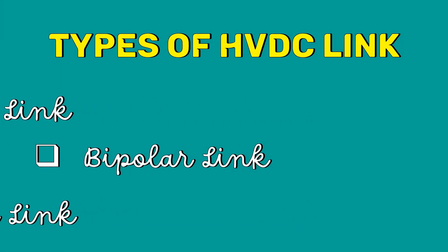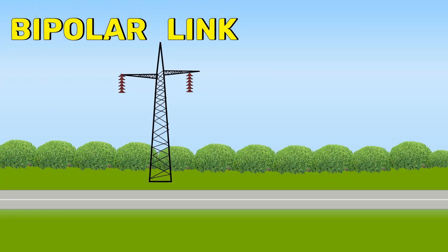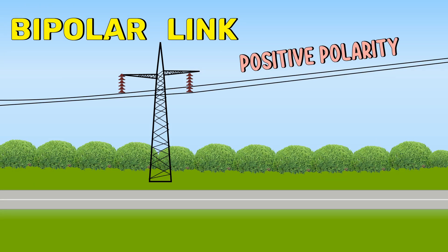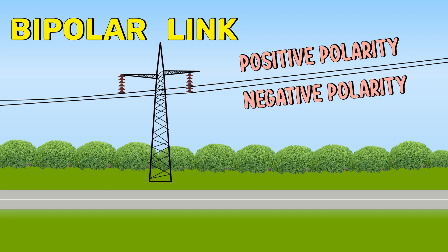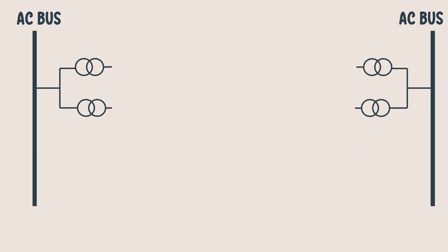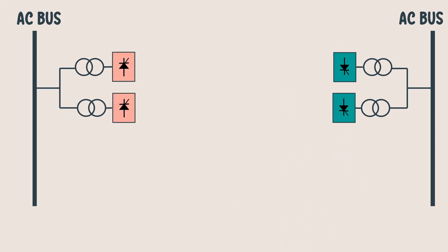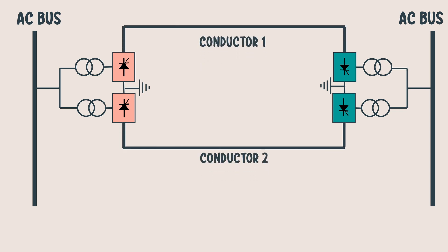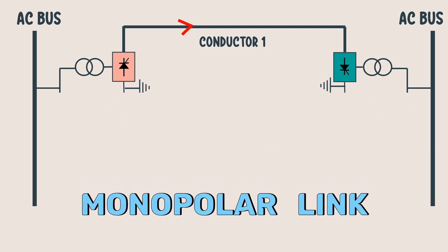The next one is the bipolar link. Bi means two. As the name indicates, this link has two conductors — one positive and the other of negative potential of the same magnitude. At each terminal, two converters of equally rated voltages are connected in series on the DC side. The junction between the converters is grounded. If the current in the two conductors is equal, then the ground current is zero. If one conductor has a fault, the link is converted into monopolar mode, meaning the other half of the system continues to supply power.